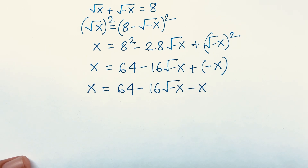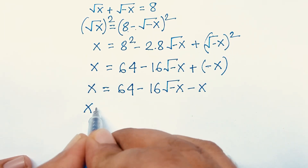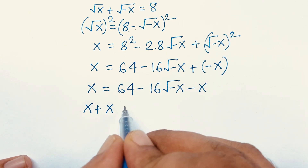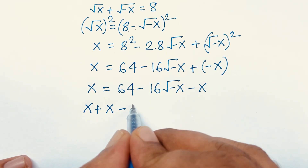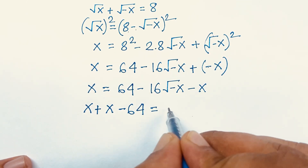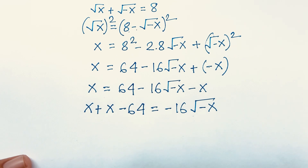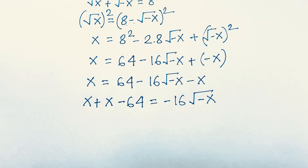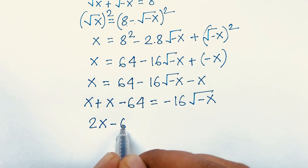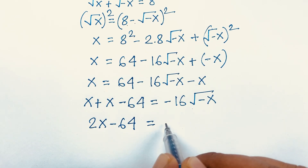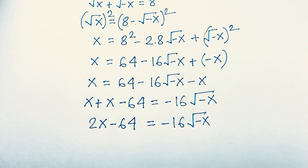We rearrange by moving minus x to the left side: x + x = 2x, and moving 64 to the right gives minus 64. So the equation becomes 2x - 64 = -16√(-x).